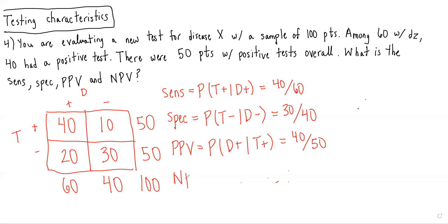And lastly, NPV is the probability of not having the disease given a negative test result, which in this case would be 30 over 50.